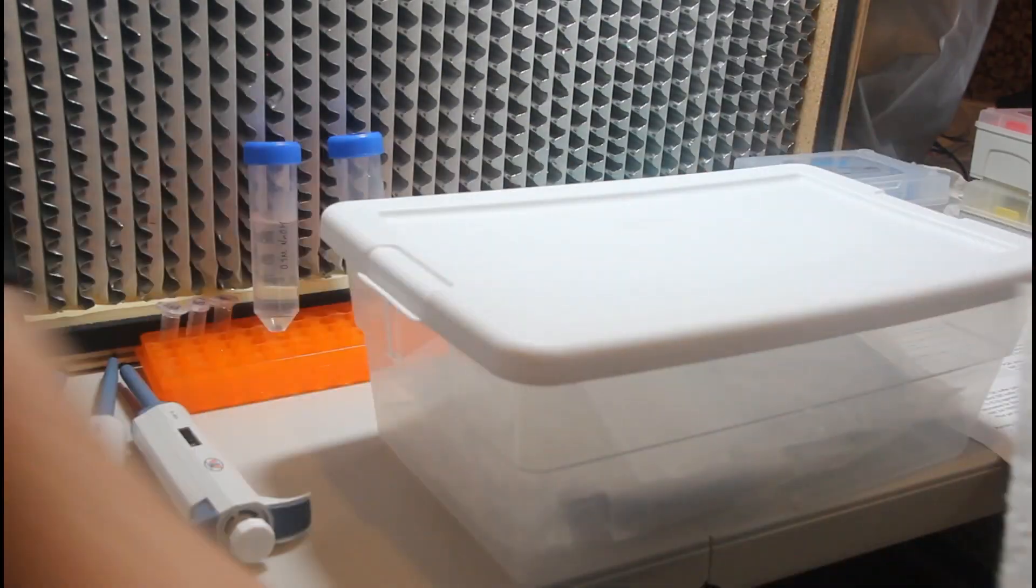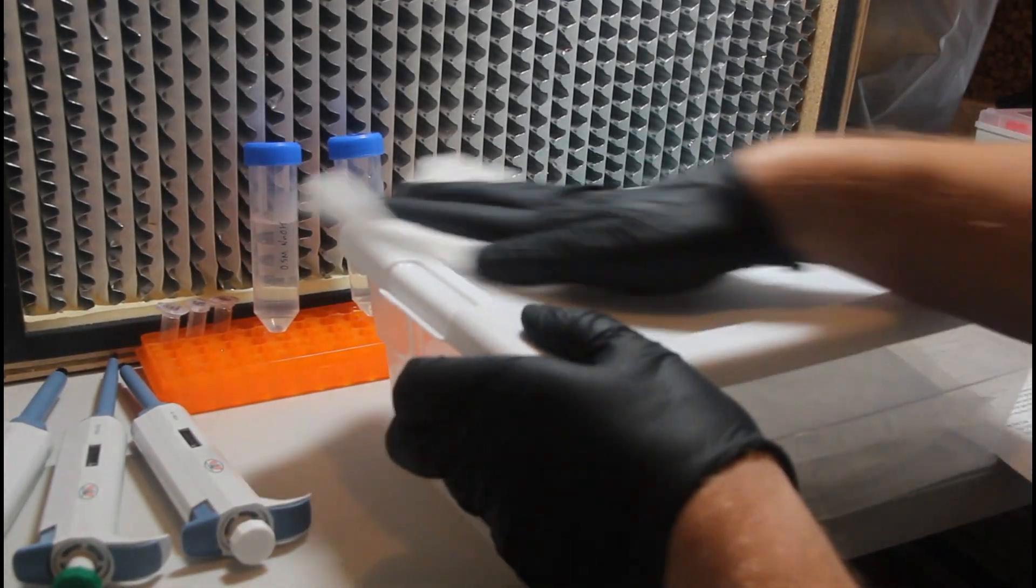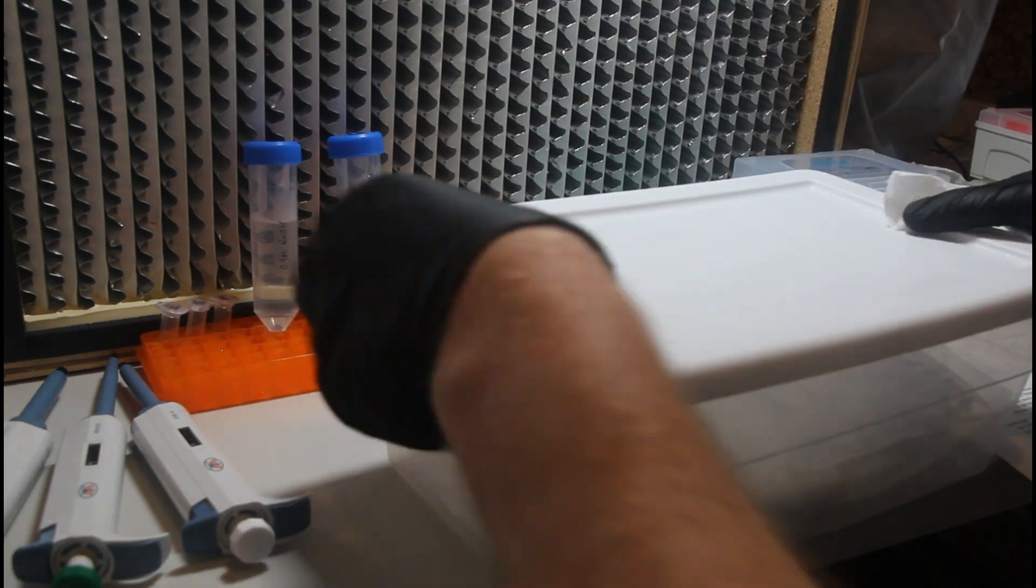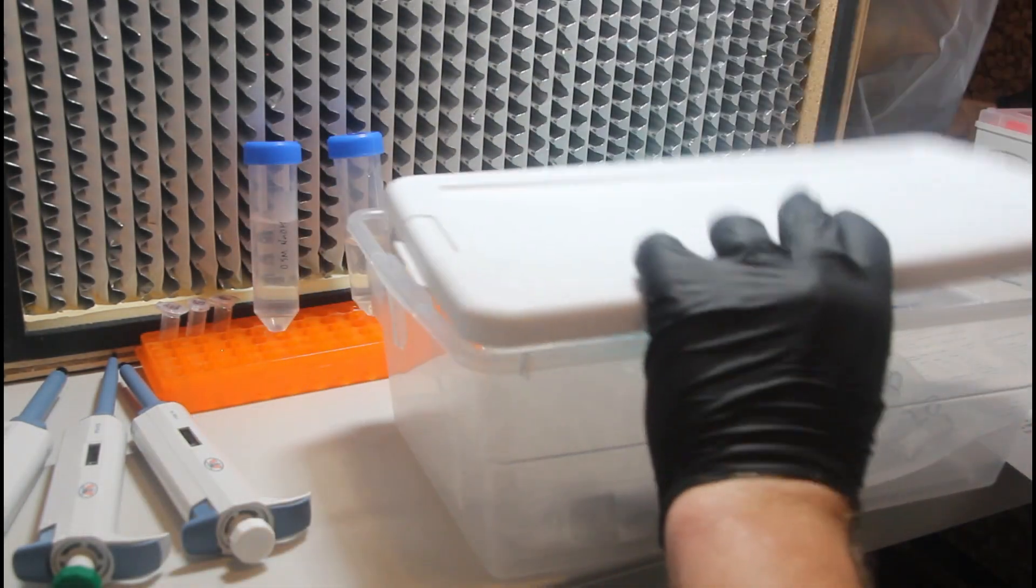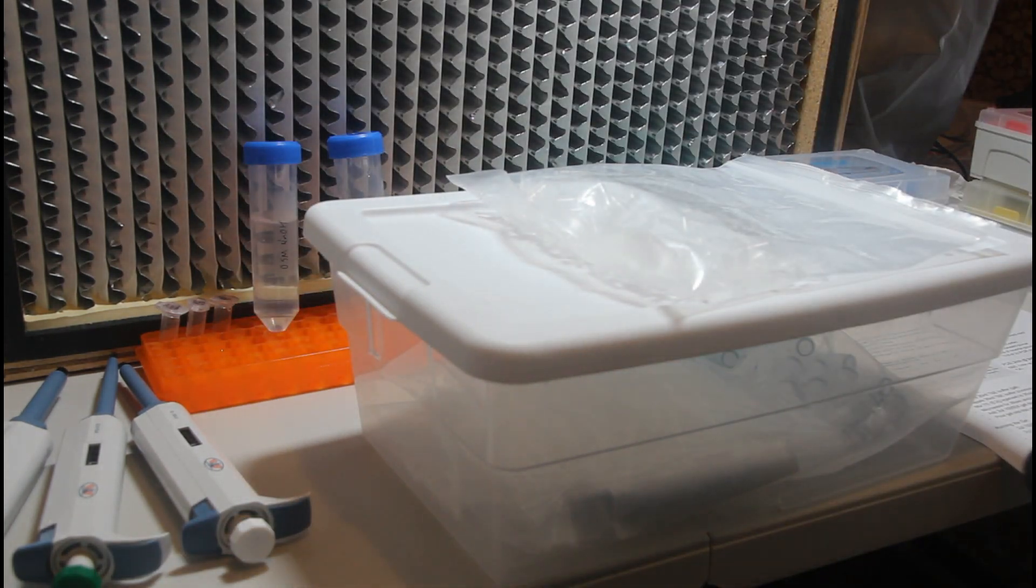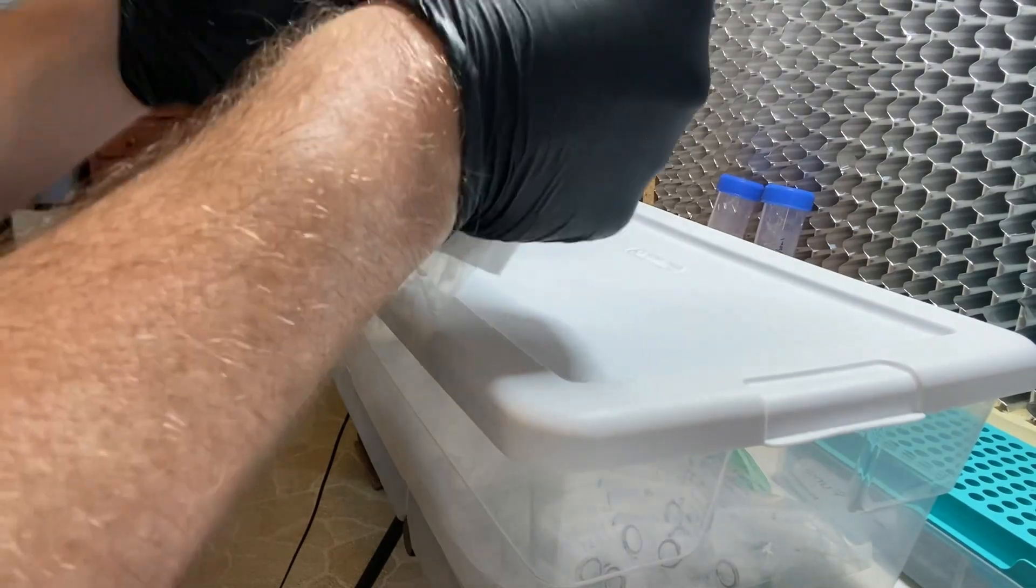The next step is we're going to pull out some tubes that we're going to be using for the procedure. We need micro centrifuge tubes. I like to store my tubes in a shoe box here and then wipe down the exterior before I open it. This just again is to help mitigate contamination. We will need one tube for each sample. We're going to do two today. We're going to do the seagrass fungi and an aspergillus.